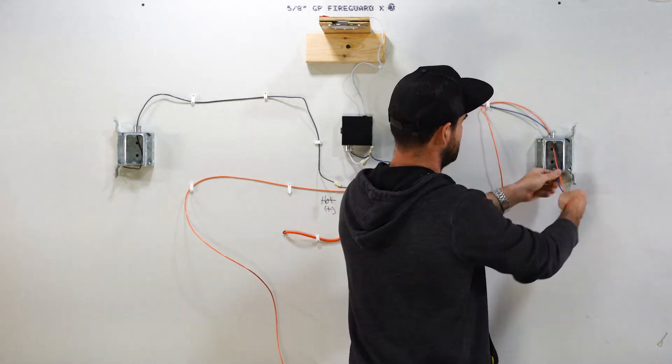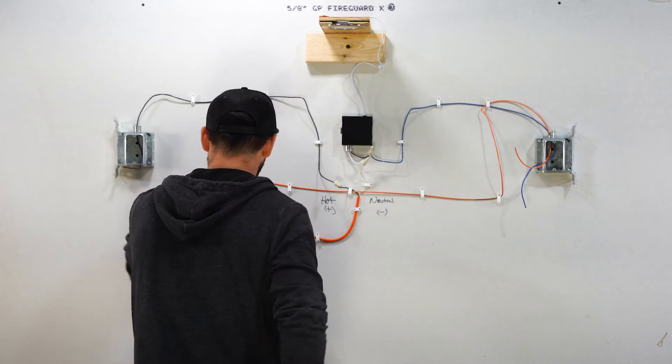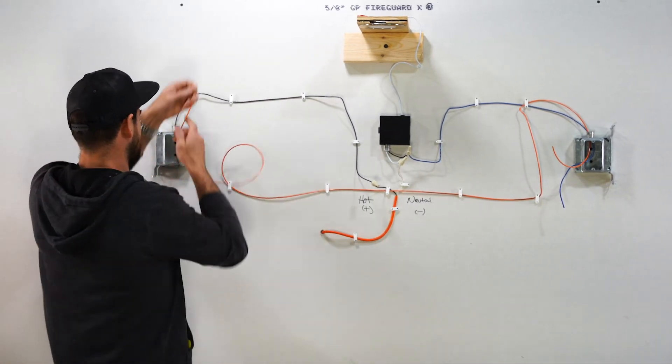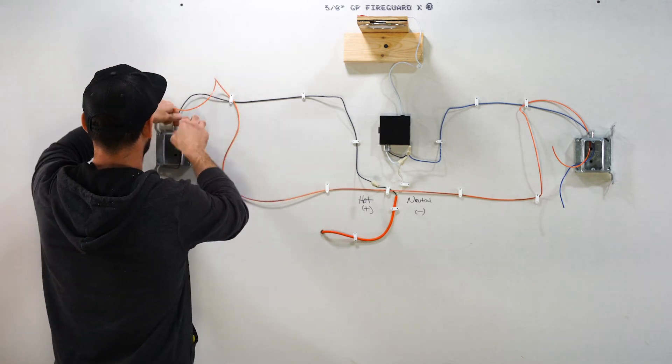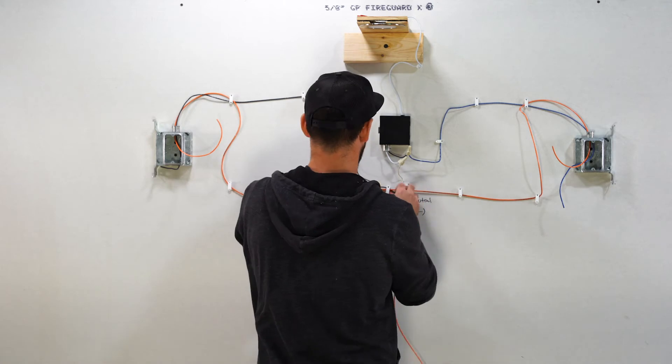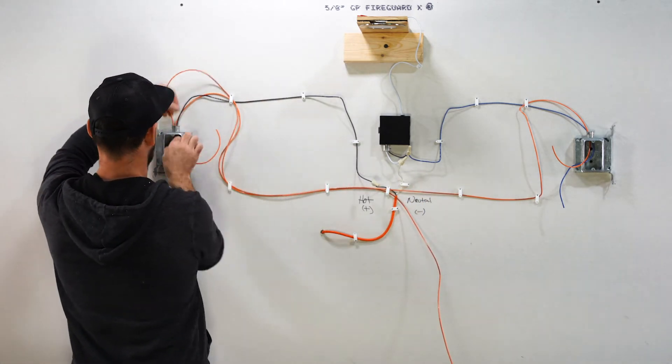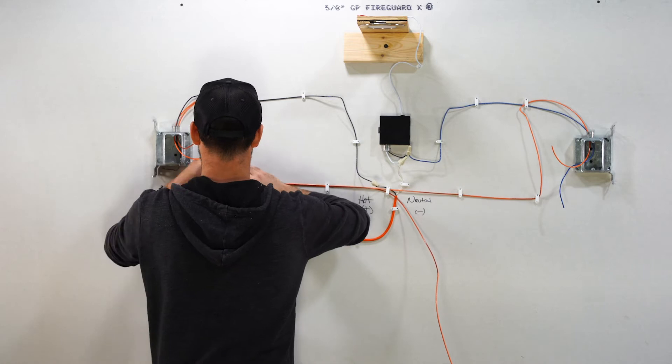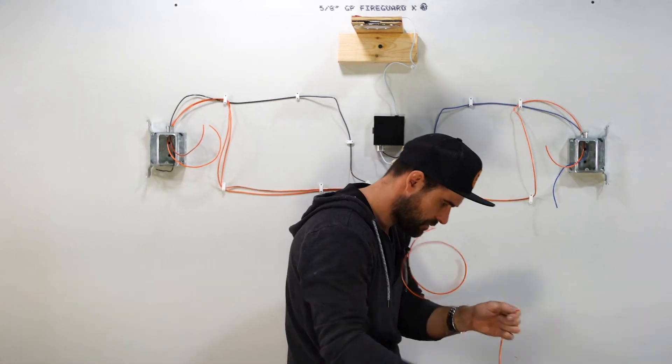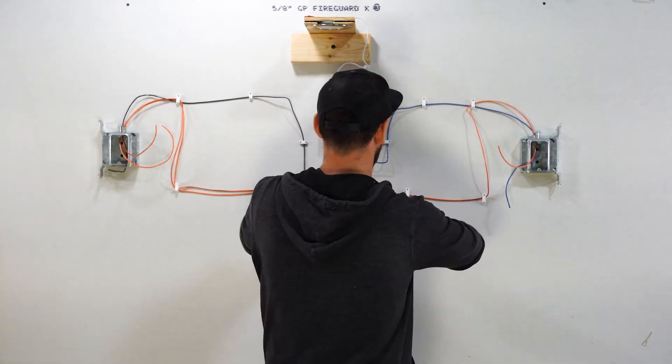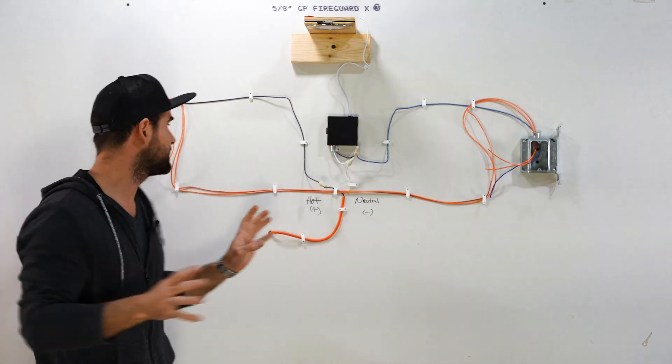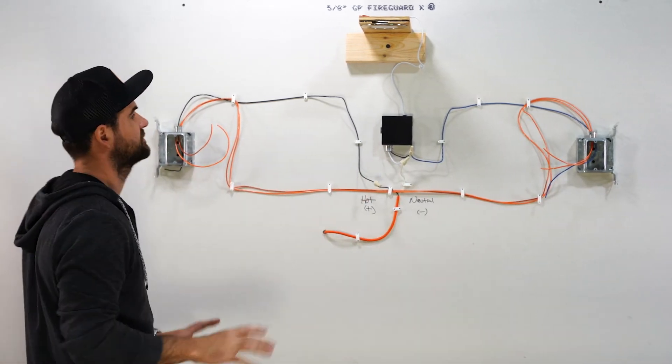That's going to run right into there, trim this up, same thing over here, and then we're going to run it again. We're going to run one right back the other way. Okay, so now we've wired everything that we need to make this whole circuit work. This is now completely wired.